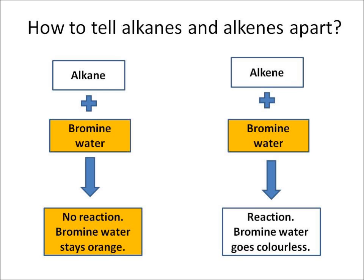We can tell alkanes and alkenes apart by looking at a simple chemical reaction. Alkanes do not react with bromine water, which is orange, so the bromine water will stay orange. However, alkenes will react with bromine water and therefore turn it from orange to colourless.